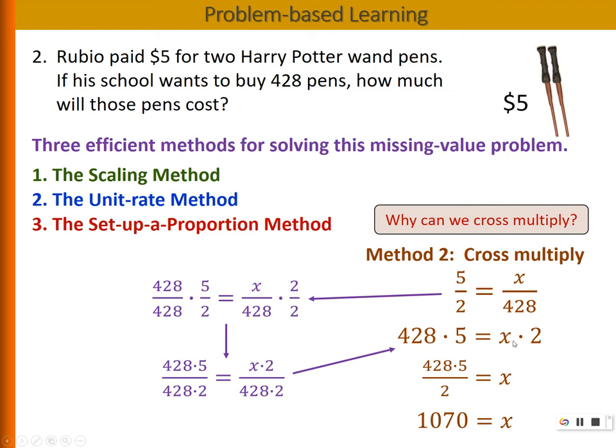So this is the second way of explaining why we can cross-multiply. So with that, thank you.